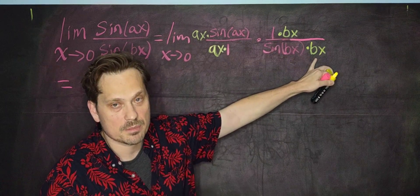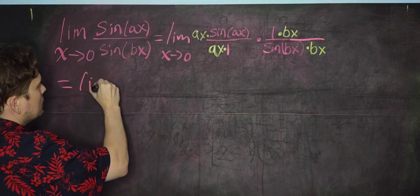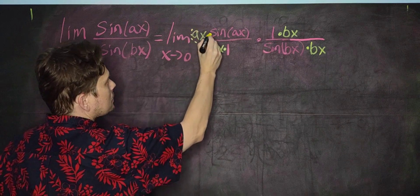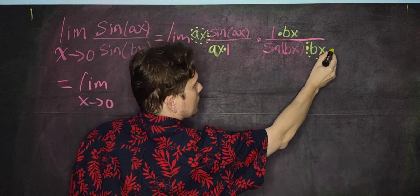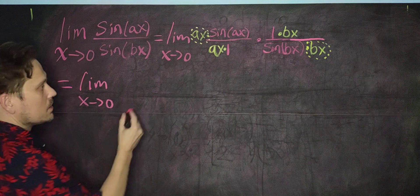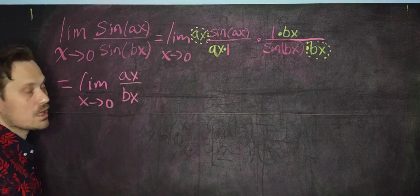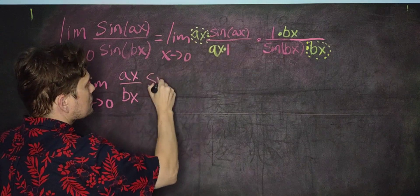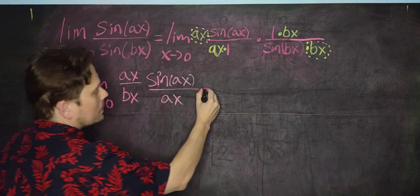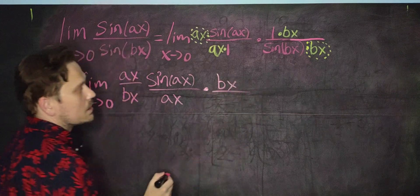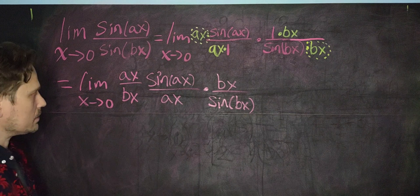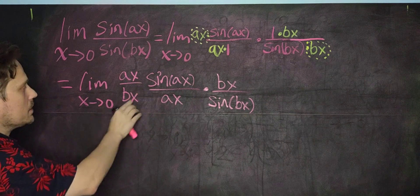I'm going to write the limit as x approaches 0, and take the ax and put it over the bx — giving the limit of ax over bx. Then copy the remaining parts: sine ax over ax, multiplied by bx over sine bx. Notice that in ax over bx, the x and x can be cancelled off since we're taking a limit and x is never equal to 0.